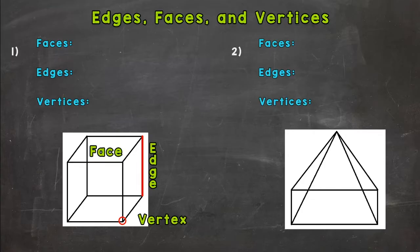As you can see we have three words up top: edges, faces, and vertices. And then we have two 3D figures down below. We have a cube on the left and a rectangular pyramid on the right. So what we're going to do is talk about what faces, edges, and vertices are and then count the number of those on each of those figures. So let's start with number one here.